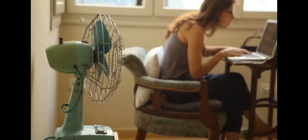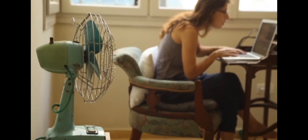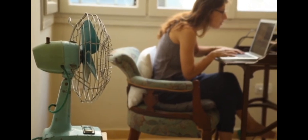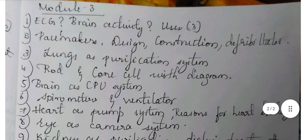Sit for two hours and you can complete this module as well. Now let's look at the important questions for module 3. There are different organs we'll be studying in this module. The first one is the brain — you have to know the diagram of the brain, how it works, what ECG is and its uses, and how electrical impulses are sent to the brain.